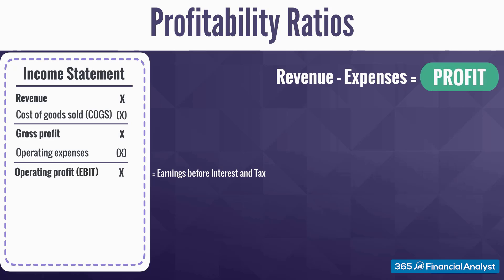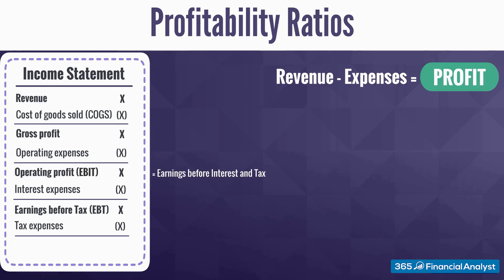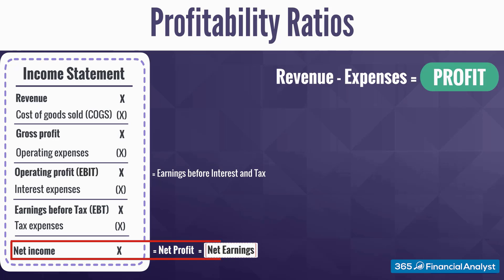Moving down the line, EBIT minus Interest Expense results in Earnings Before Tax. And EBT minus Tax equals Net Income or Net Profit of a company. Once you learn this structure, the rest of the lesson would be a piece of cake. Keep in mind that we will be using the terms Profit, Earnings and Income interchangeably — all of them measure the very same thing, that is, Profitability.